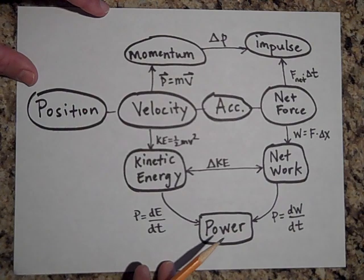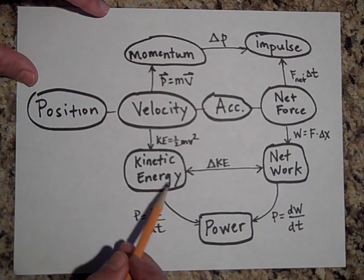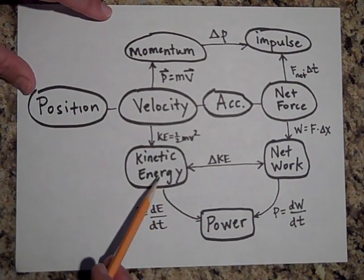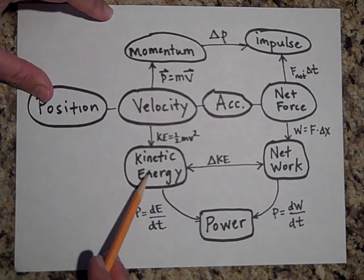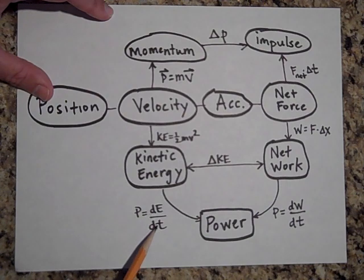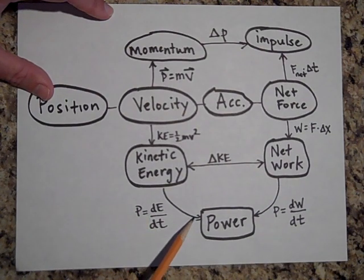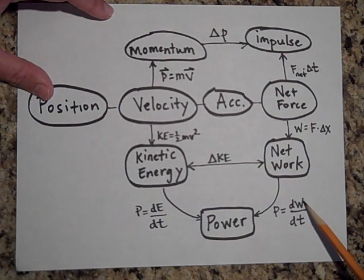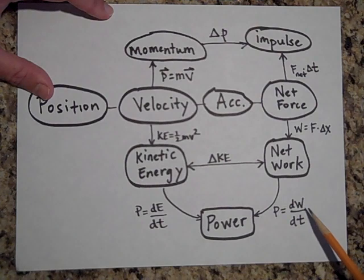Okay, finally, the rate at which energy changes forms is power, so if you take the derivative of kinetic energy with respect to time, dE/dt, that gives you power measured in watts. But power is also the rate at which work is done, so dW/dt, where W is work—the rate at which work is done with time is also power.